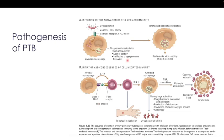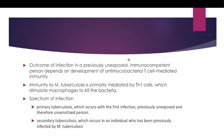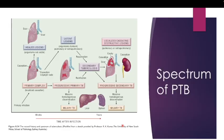The outcome of infection in a previously unexposed immunocompetent person depends on the development of antimycobacterial T-cell mediated immunity, particularly T-helper cells. Immunity to Mycobacterium tuberculosis is primarily mediated by T-helper 1 cells, which stimulate macrophages to kill the bacteria. There are two spectrums: primary tuberculosis — the first infection in a previously unexposed and unsensitized person — and secondary tuberculosis, which occurs in individuals previously infected with tuberculosis.